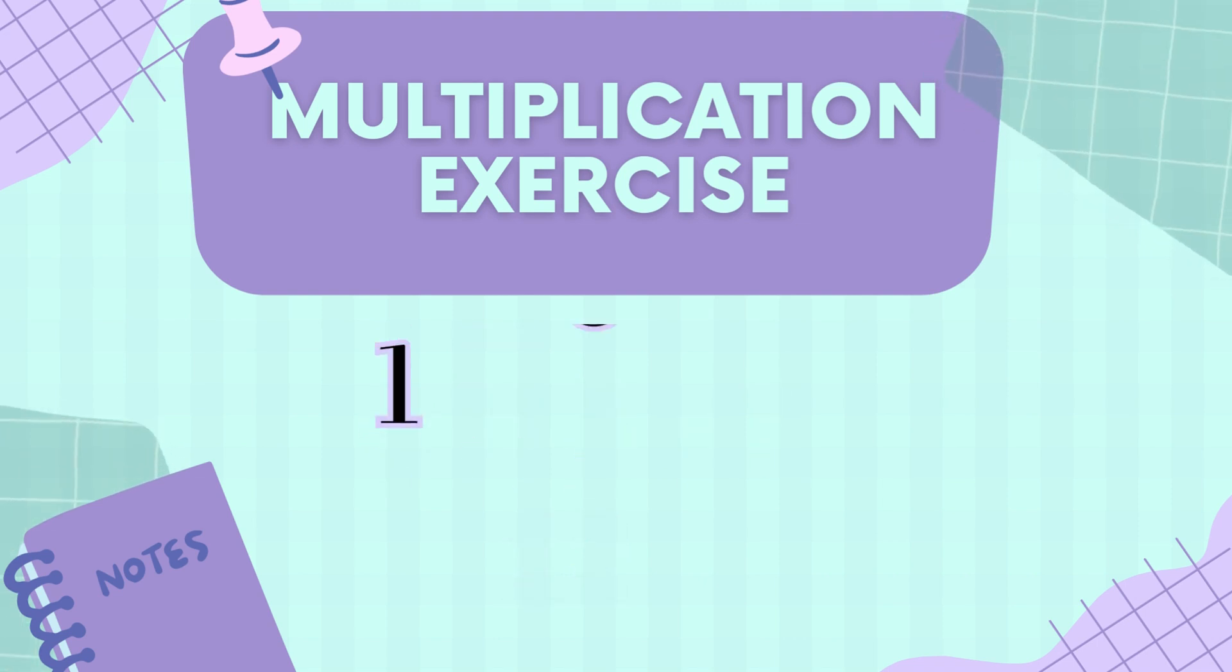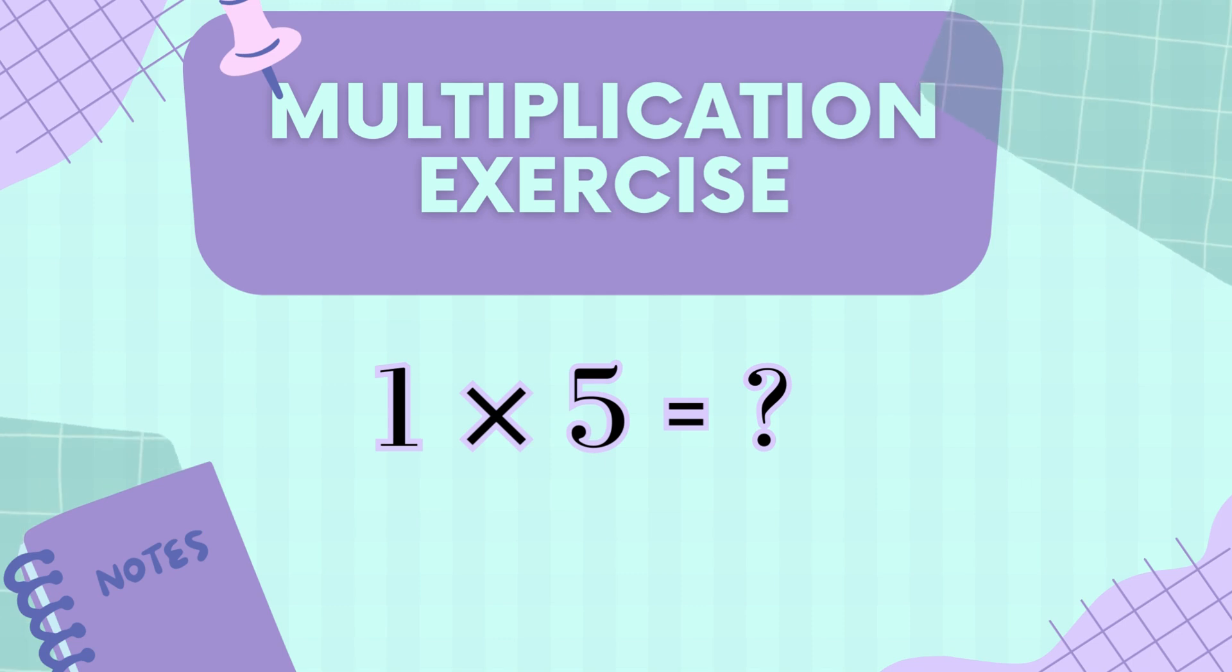One times five is our next stop! Well, when you multiply any number by one, you just get that number back! So one times five is? You guessed it! Five!